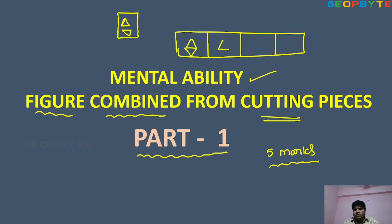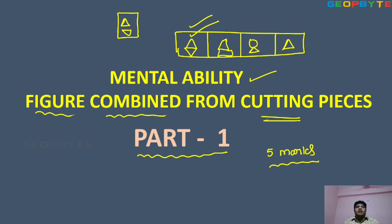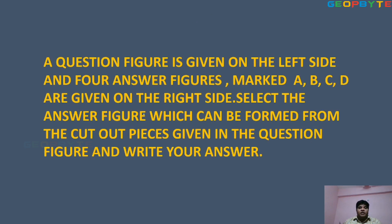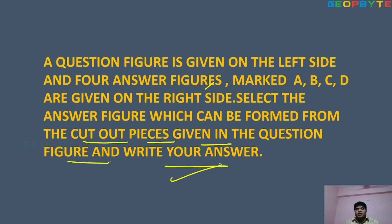There are four answer options. Out of these four options, which option has these two triangle shapes? In the first option, these two triangle shapes are existing, so that is the answer. This is the pattern, children. A question figure is given on the left side and four answer figures marked as A, B, C, D are given on the right side. Select the answer figure which can be formed from the cutout pieces given in the question figure and write your answer. Visual representation is very important in mental ability.